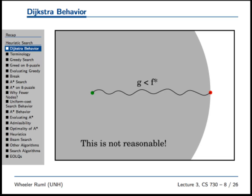I'm using a new letter here: F. F means sort of like total cost, and the star means optimal — like shiny, bright, optimal. So F* is the optimal solution cost. This is totally unreasonable, so we're going to get serious now.